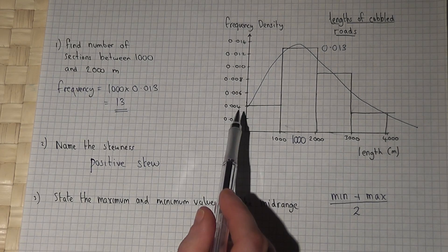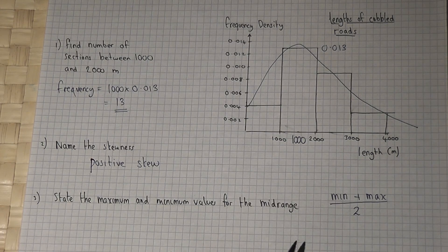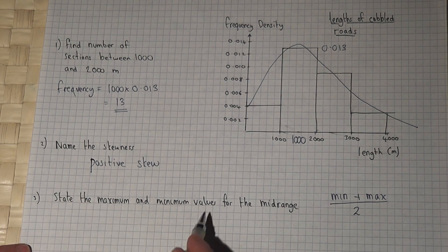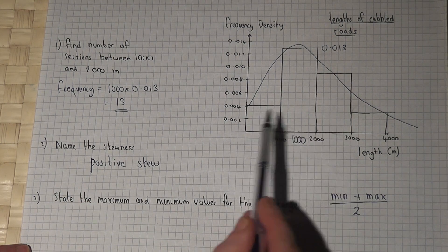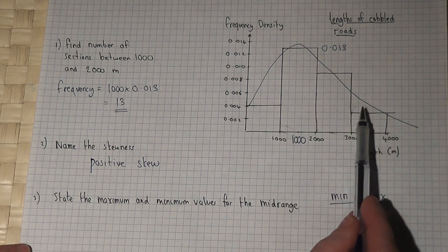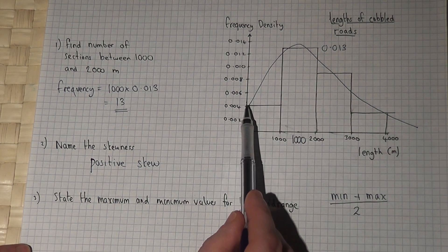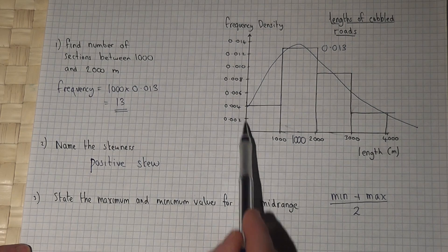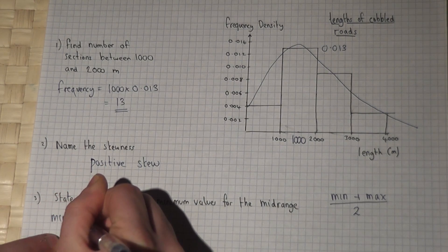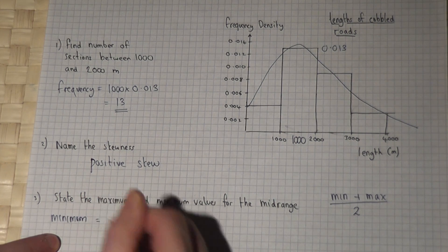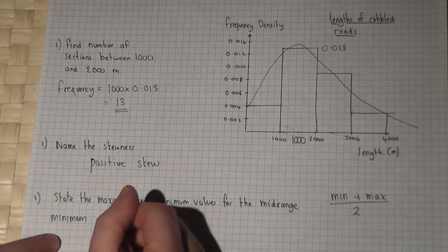This is a histogram, and to find the minimum value for the mid-range, we have to think: what's the lowest possible length in meters? It could be as low as zero—the graph starts at zero. So for the minimum, the lowest could be zero.